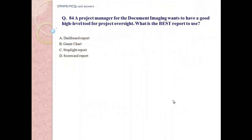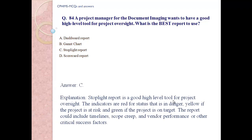Question number 84: A project manager for a department imaging wants to have good high-level tools for project oversight. What is the best report to use? A. Dashboard reports, B. Gantt chart, C. Spotlight report, D. Scorecard. Answer C. Explanation: A spotlight report is a good high-level tool for project oversight. The indicators are red for status that is in danger, yellow if the project is at risk, and green if the project is on track. The report could include timelines, scope creep, and vendor performance or other critical success factors.